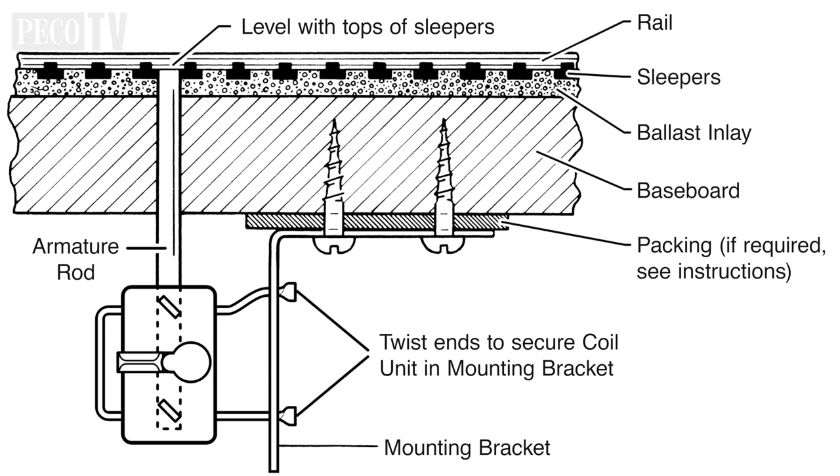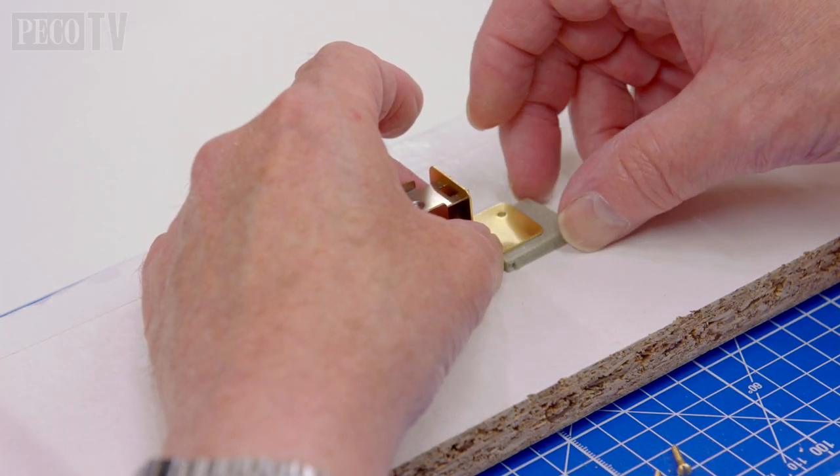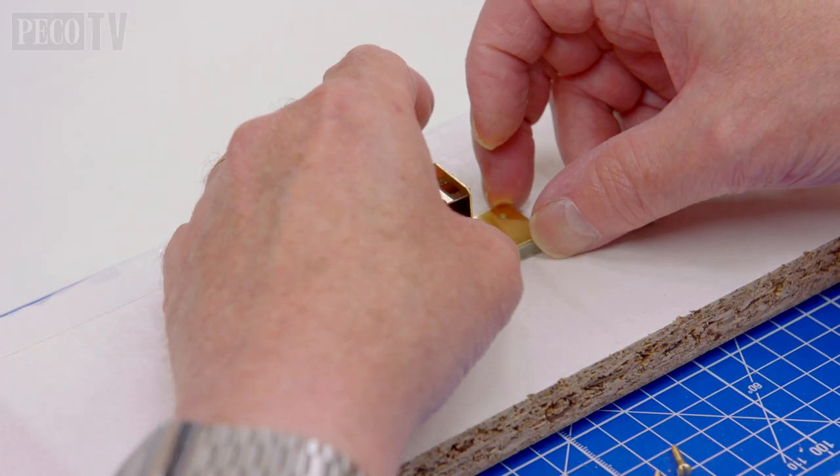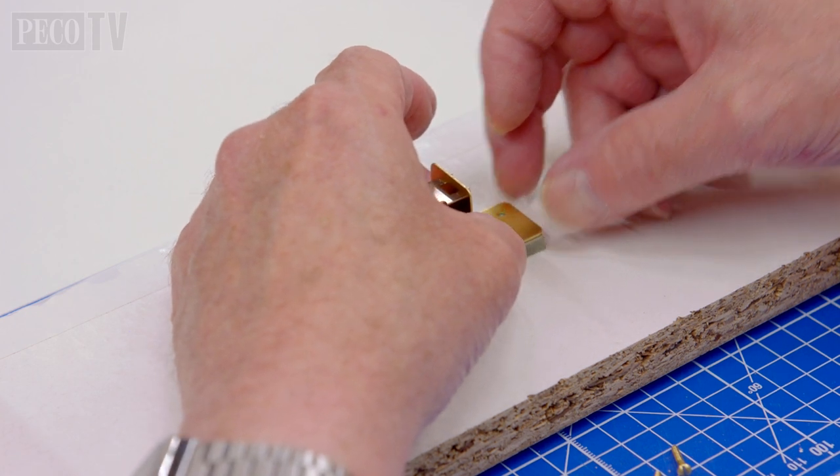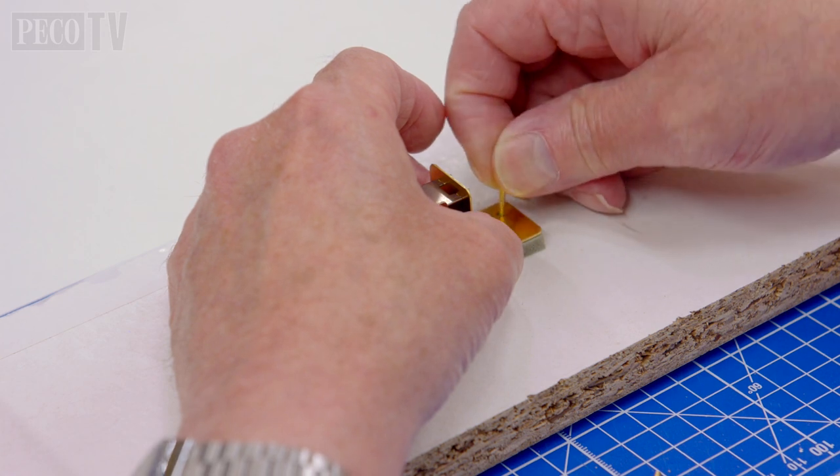Important note: The top of the armature rod should be flush with the top surface of the sleepers. If the armature rod is too long, it can either be cut, or alternatively, packing of suitable thickness can be added between the mounting bracket and the baseboard.